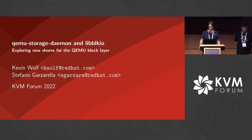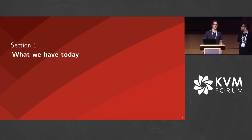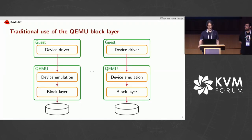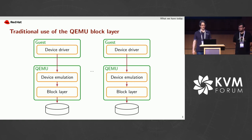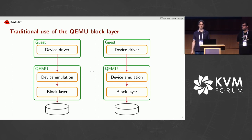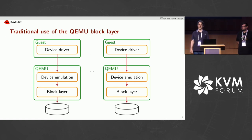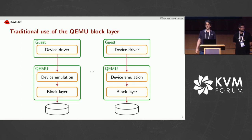I'll start off by talking about what we have today — the traditional setup that we have with QEMU, that probably everybody here knows. The typical thing is you have one QEMU process that emulates one guest, and the QEMU process just accesses an image file to expose it to the guest. You could have multiple VMs on the same host, so the second would just be a second QEMU process that opens its own file.